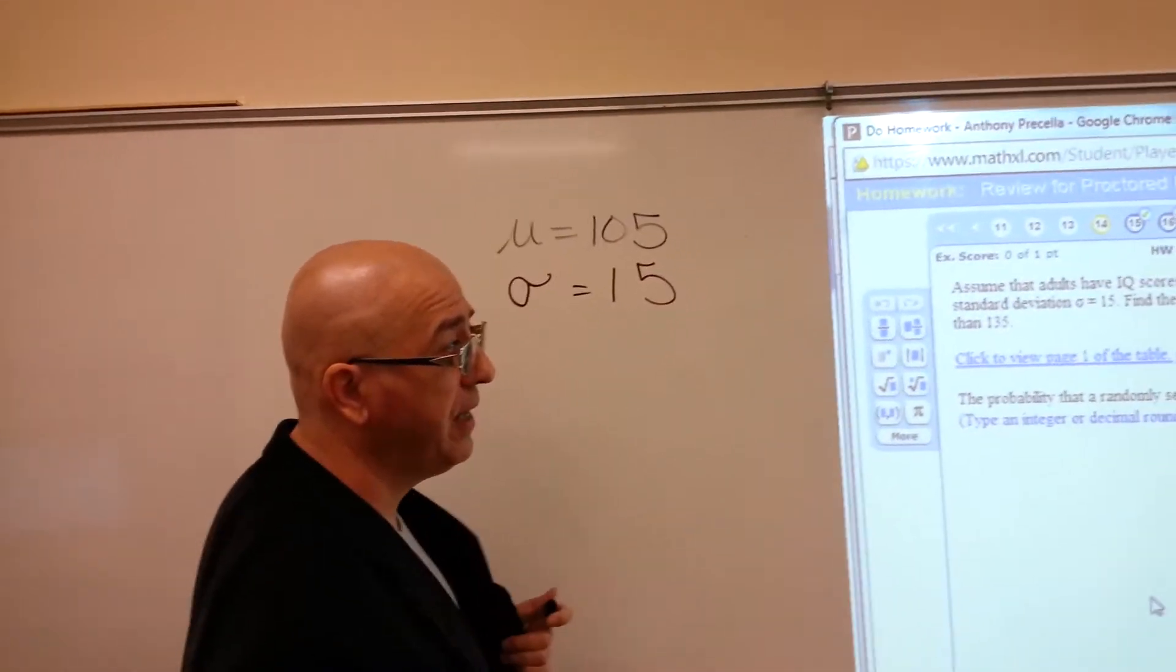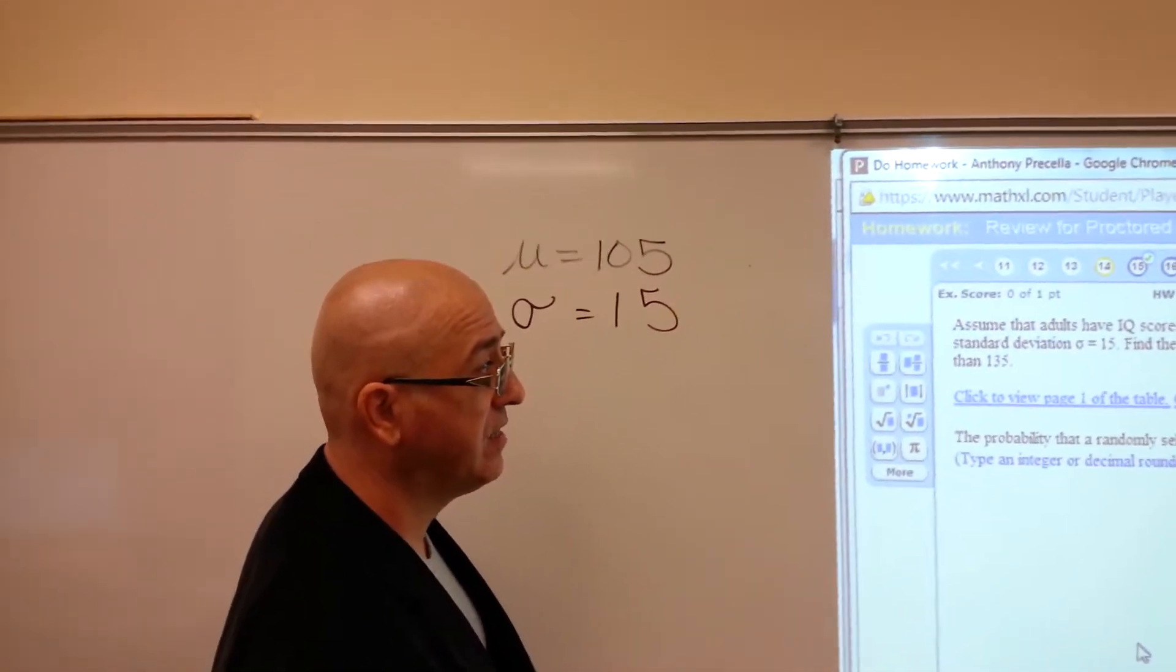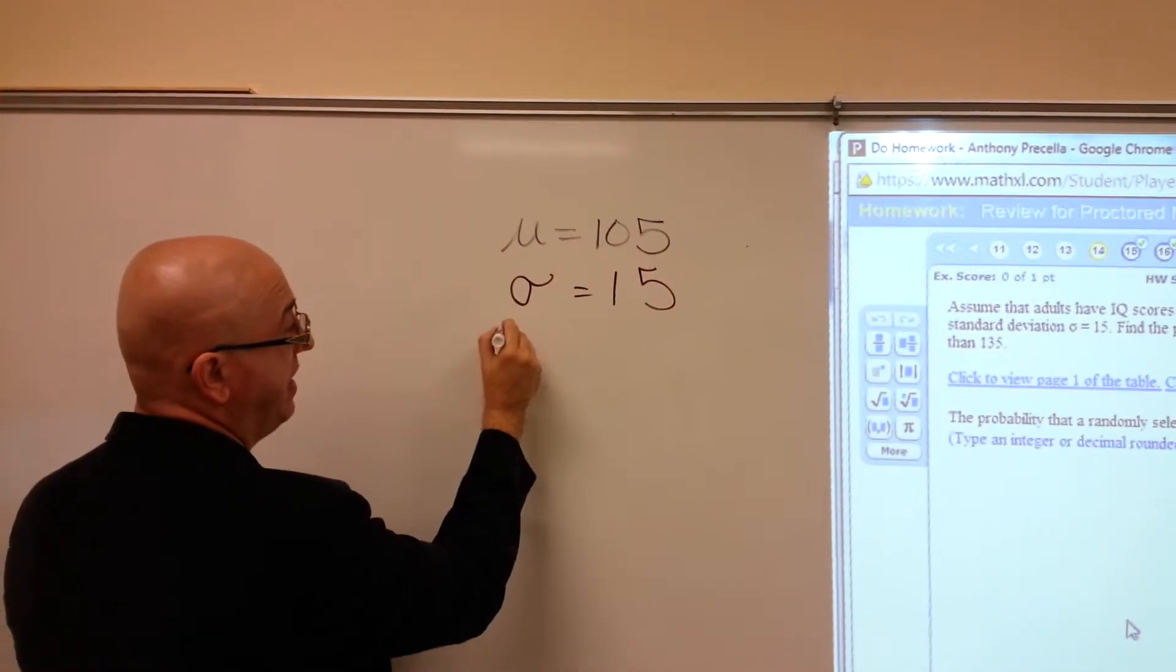Find the probability that a randomly selected adult has an IQ less than 135.